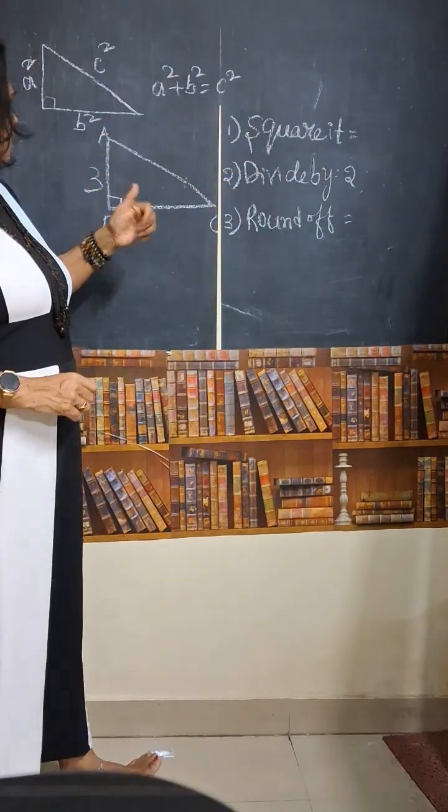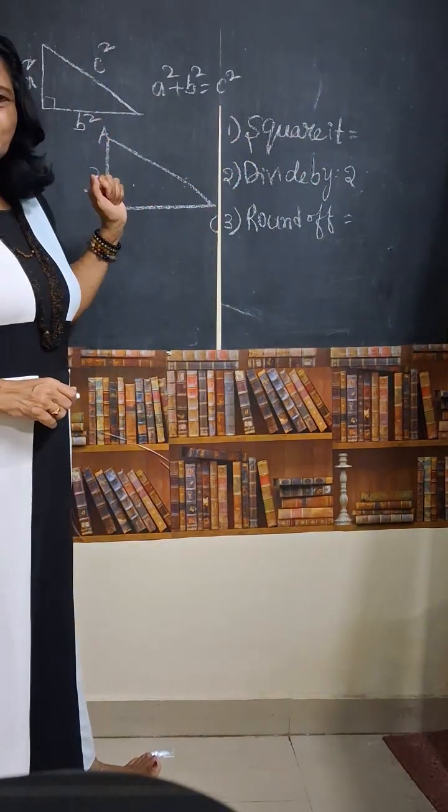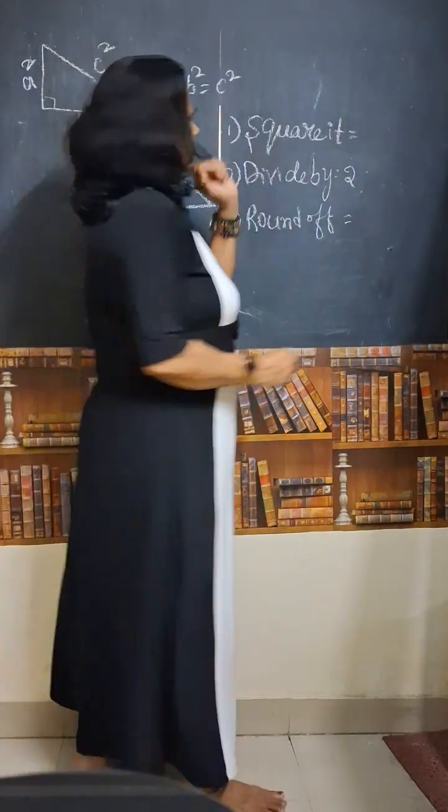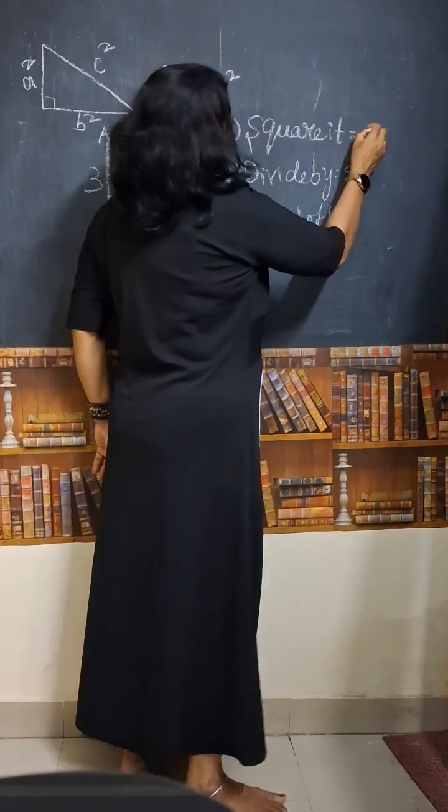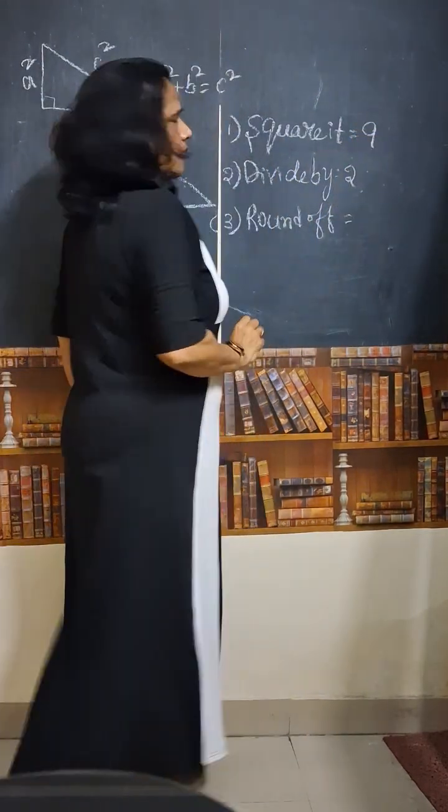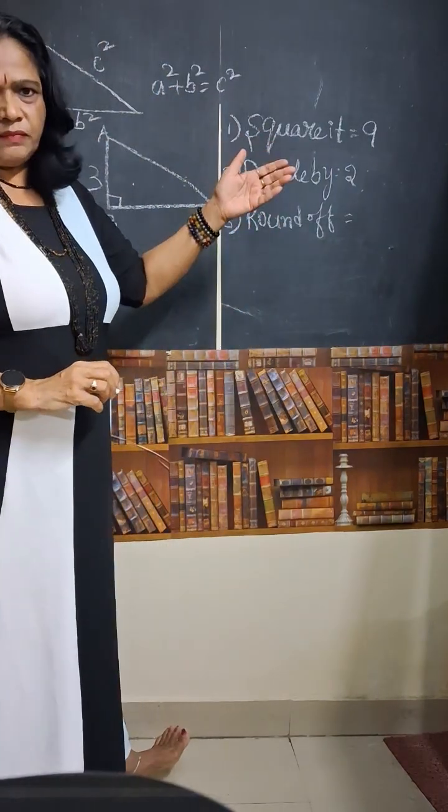Square it. First step is square it. The given number, this one of the side of the triangle is three. So find the square of it. If you square it, that will become nine. Three into three, that is nine.